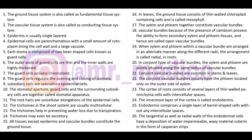Root hair are unicellular elongations of epidermal cells - don't forget that. Trichomes in the shoot system are usually multicellular. Trichomes help in preventing water loss due to transpiration and may even be secretory in nature.